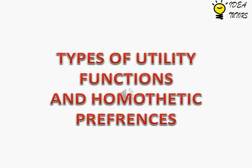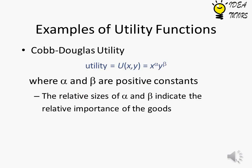Types of Utility Functions and Homothetic Preferences. Cobb-Douglas Utility: x to the power alpha times y to the power beta, where alpha and beta are positive constants. The relative sizes of alpha and beta indicate the relative importance of the goods.